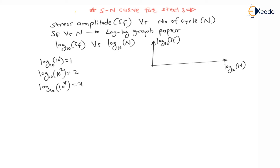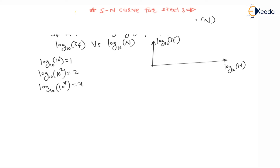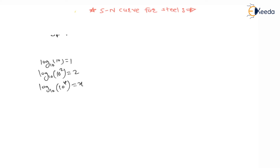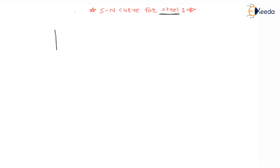We are going to draw this log-log curve, or log(SF) versus log(N) curve — also called the SN curve. We are drawing it for steel. On the y-axis we consider strength SF on log paper, and on the x-axis we consider number of revolutions completed before failure.